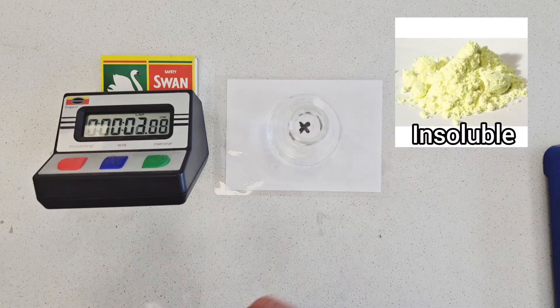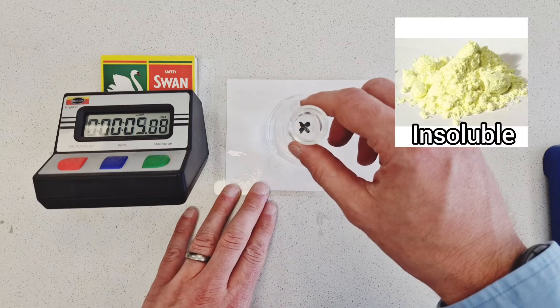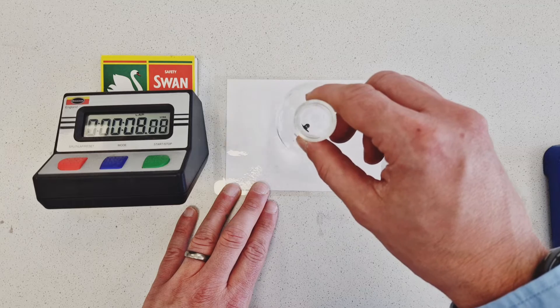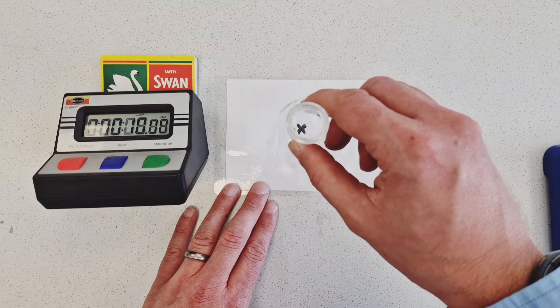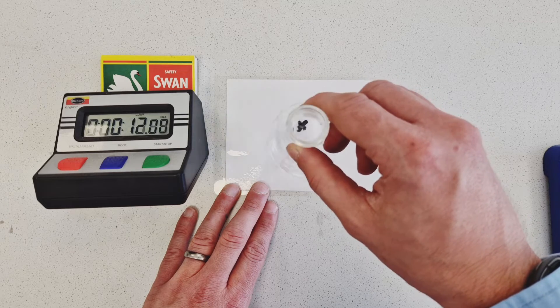Now, you may remember that sulphur as an element is a yellow solid, so what happens over time is a precipitate will form and a cloudy suspension will be created as the reaction goes to completion.